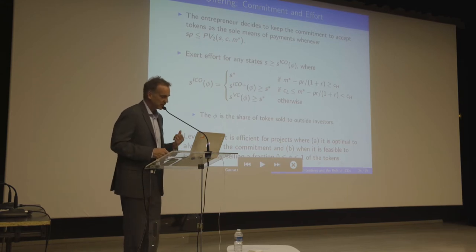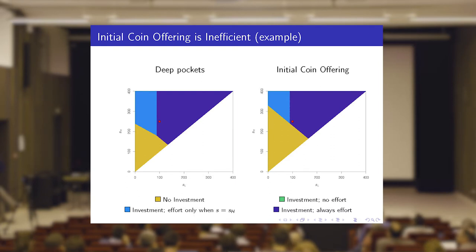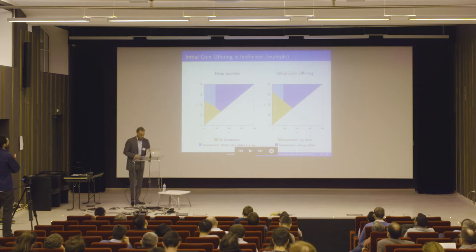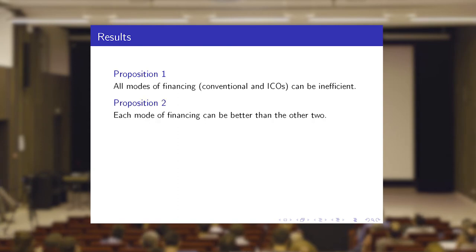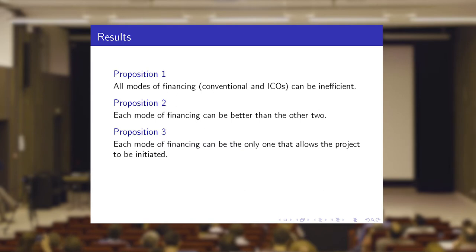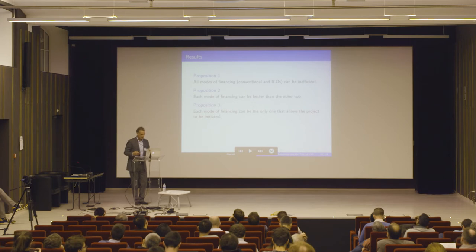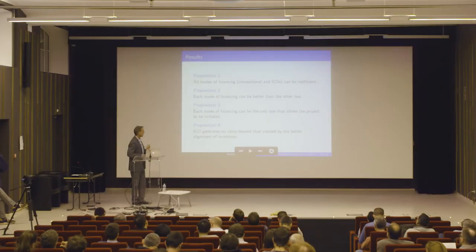In this constructed example, ICO financing restores the efficient outcome — it's the only mode that matches the deep-pocketed case. Summarizing results: all modes of financing can be inefficient; each mode can be better than the other two; each mode can be the only one that allows a project to be initiated. And an ICO generates no value beyond that created by better alignment of incentives.